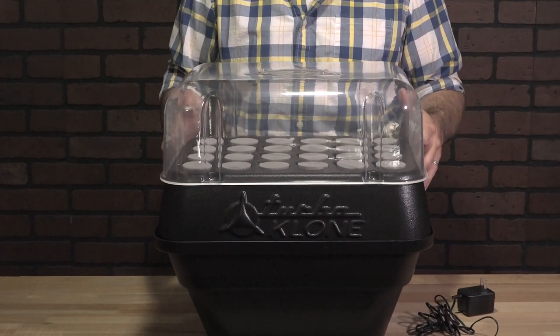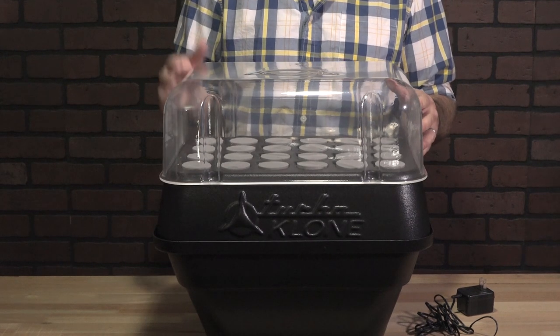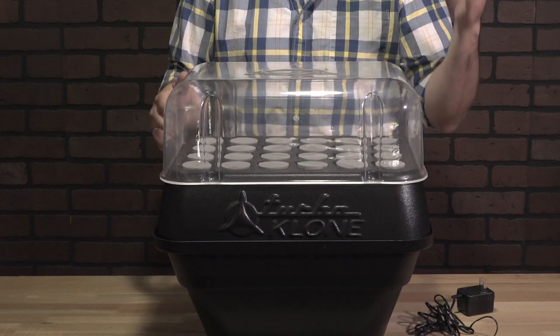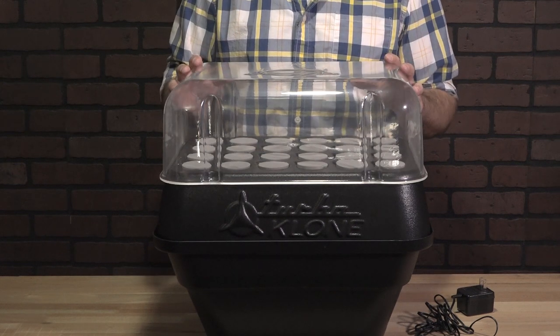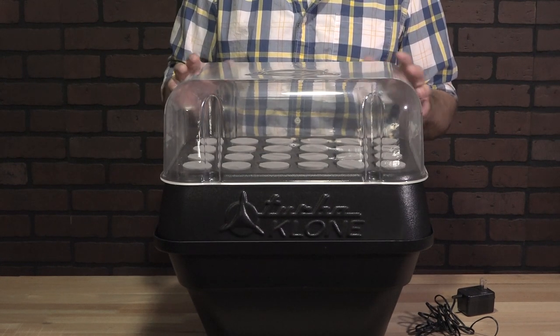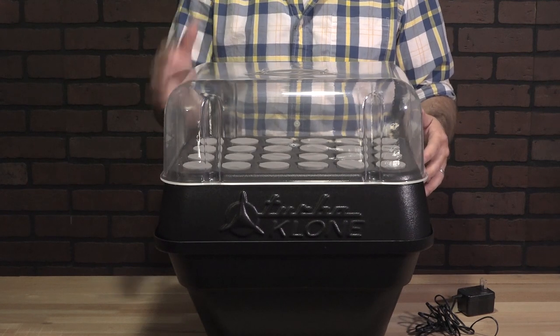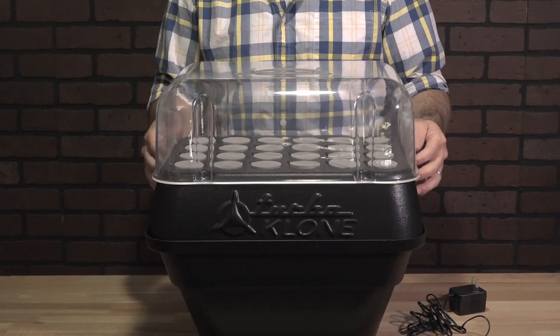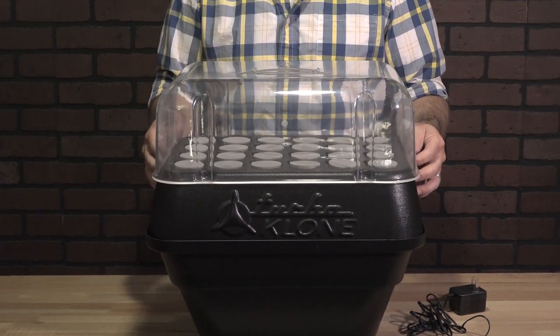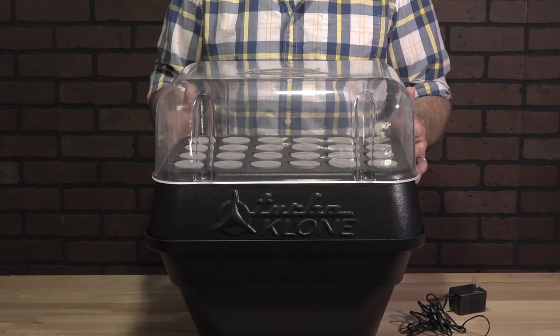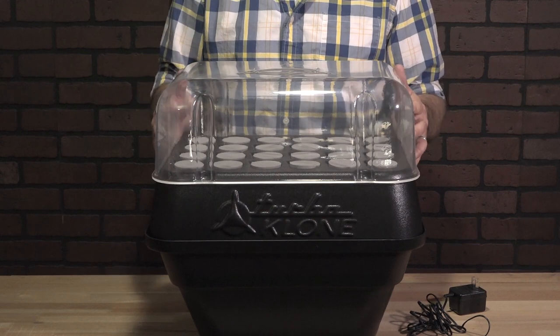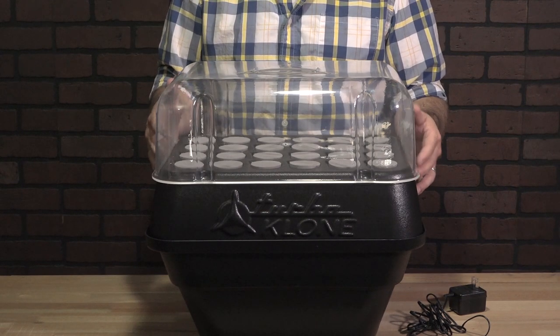I would recommend having the humidity dome on for the first four or five days after you've taken the cuttings and put them in here. Allow the dome to help maintain that moisture and allow the cuttings to get over that initial transplant shock. Then after day four or five, they should be used to their new environment. Root knobs are starting to form, that uptake is greater, and then they can go from there without the dome.